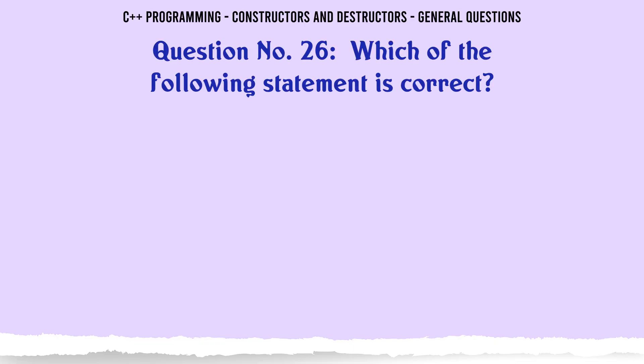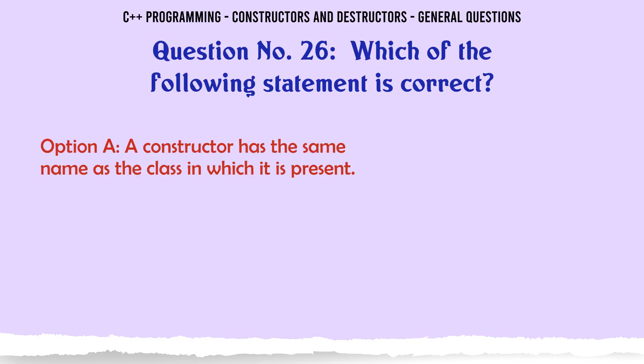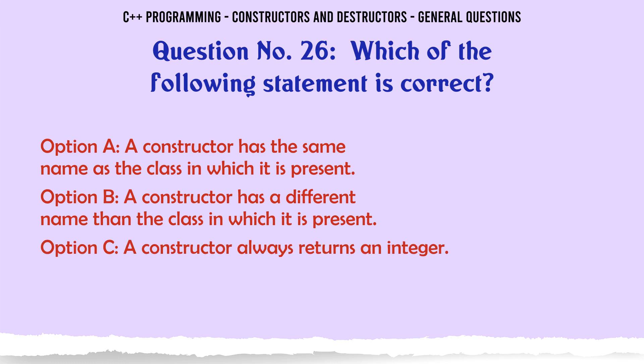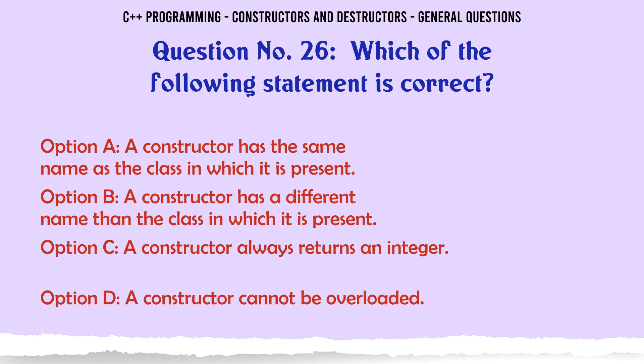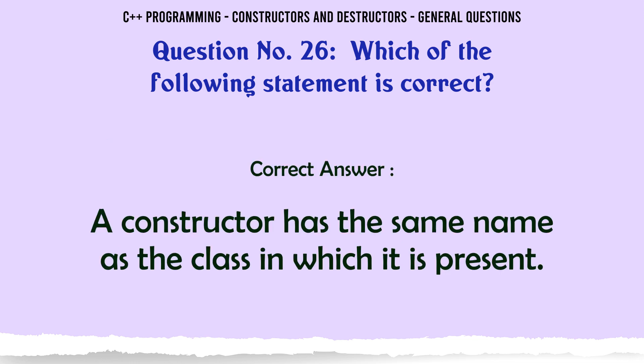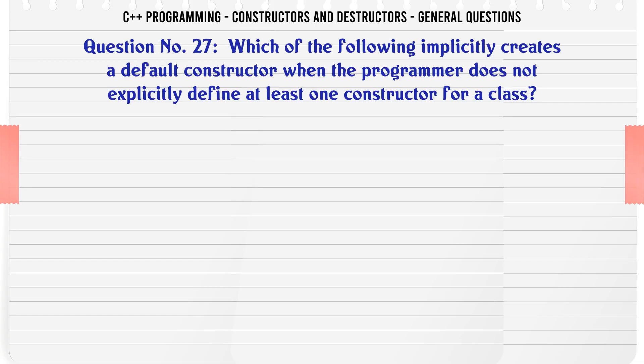Which of the following statements is correct? A. A constructor has the same name as the class in which it is present. B. A constructor has a different name than the class in which it is present. C. A constructor always returns an integer. D. A constructor cannot be overloaded. The correct answer is A constructor has the same name as the class in which it is present.